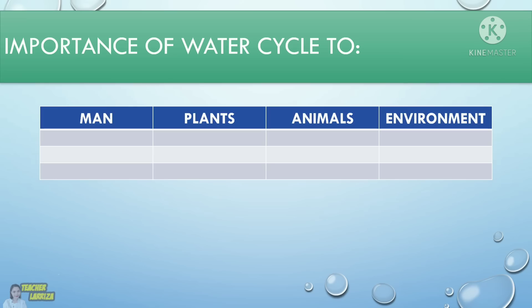Now let us try to answer this activity. Write the importance of water cycle to man, plants, animals, and the environment. Do this in your notebook.